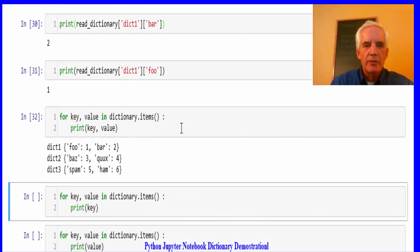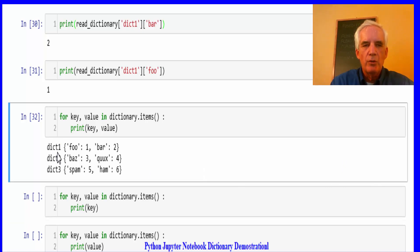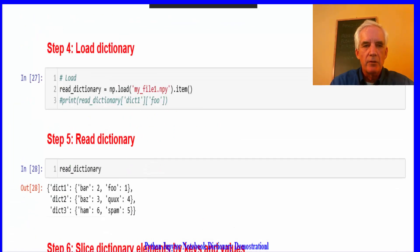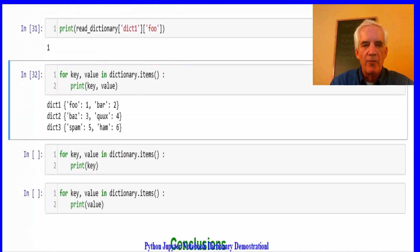Then the key-value pairs for dictionary one, two, and three. And we'll see that this is, we've already saw that before. Go back up here. So that's where we saw that before.